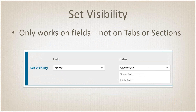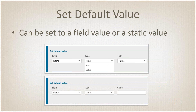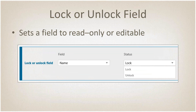Visibility again only works with fields — it does not work on tabs or sections — and all it does is show and hide the field. For default value, this should create a default value for a new record, setting the default field value to either another field's value or a static value. Lock or unlock — this is read-only, meaning locking the entry of data on the form itself. So locking a field keeps people from editing that field value. And again, it's a pair thing — if you lock it at some point, you may need to unlock it.